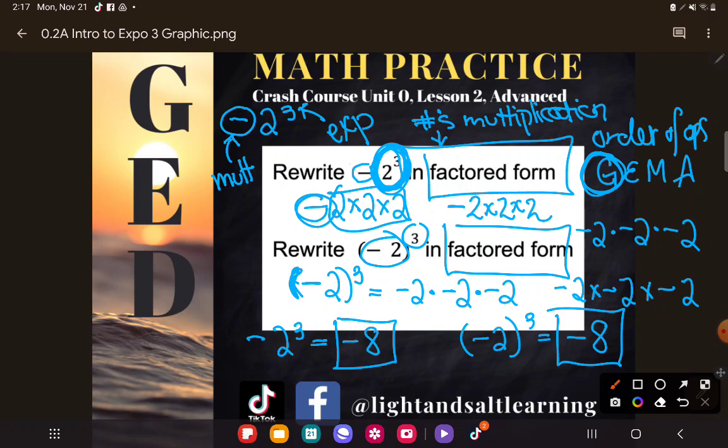Now, again, some of you guys are saying, Kate, does it really matter? Because in the end, they're both going to simplify to the same thing. -2 × 2 × 2 is -8, and -2 × -2 × -2 is -8. So why the heck should I care? And what I say to you is it doesn't always work that way.